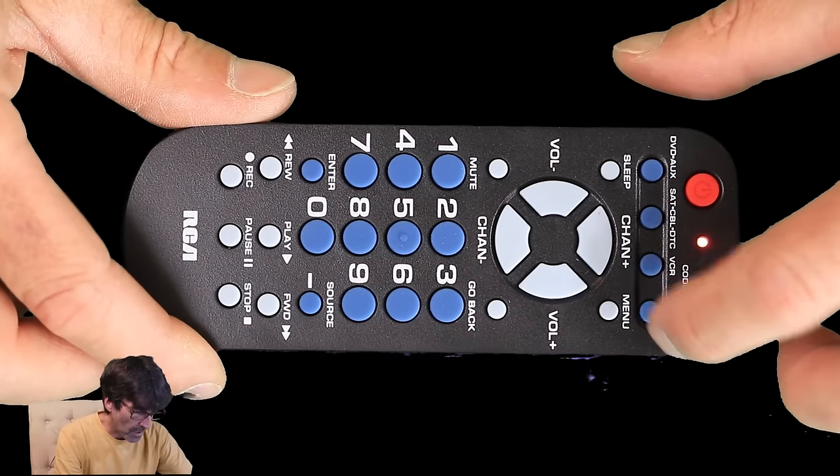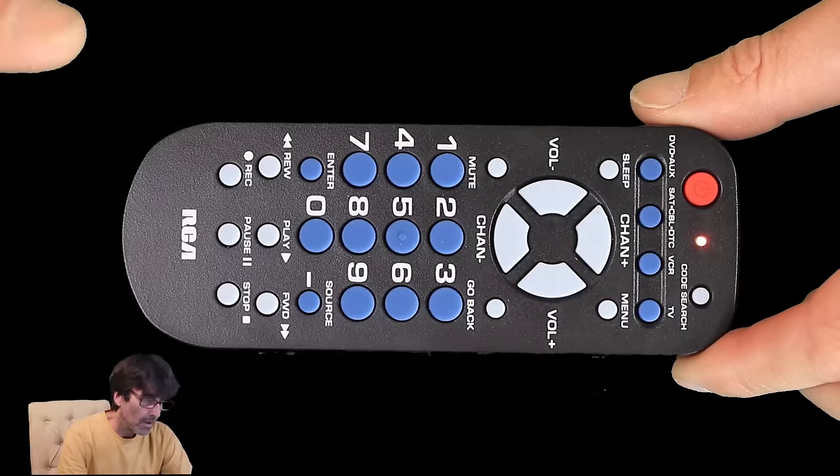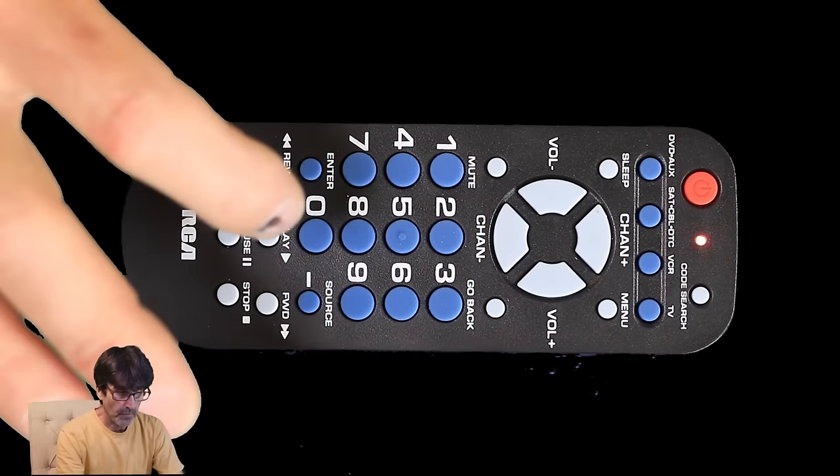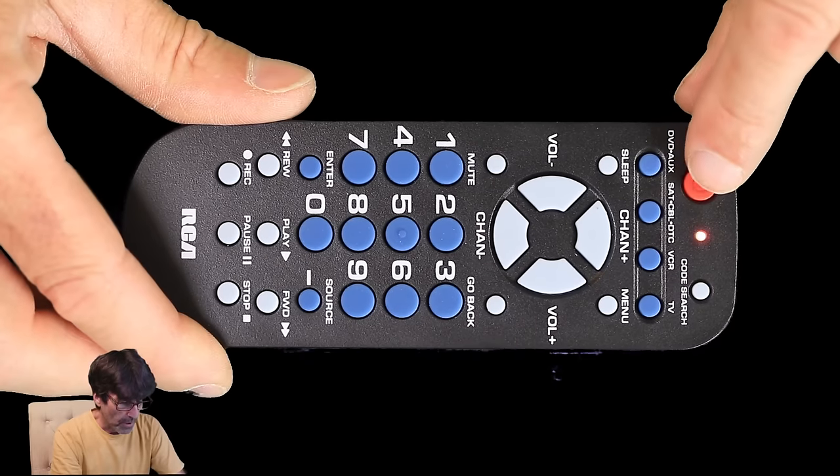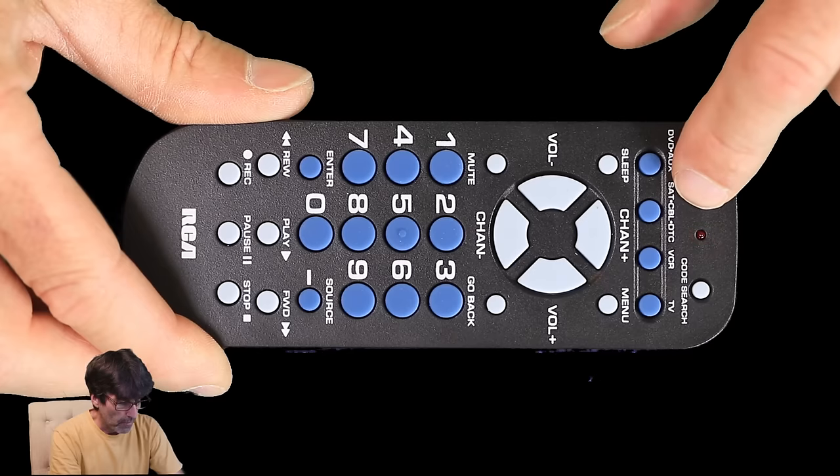just the same as before until the red light comes on and then push the component key. In this example, I'm going to use the TV right there. And the different thing is now I'm not going to input the four-digit code, but instead you're going to keep pushing power, power, power, power.